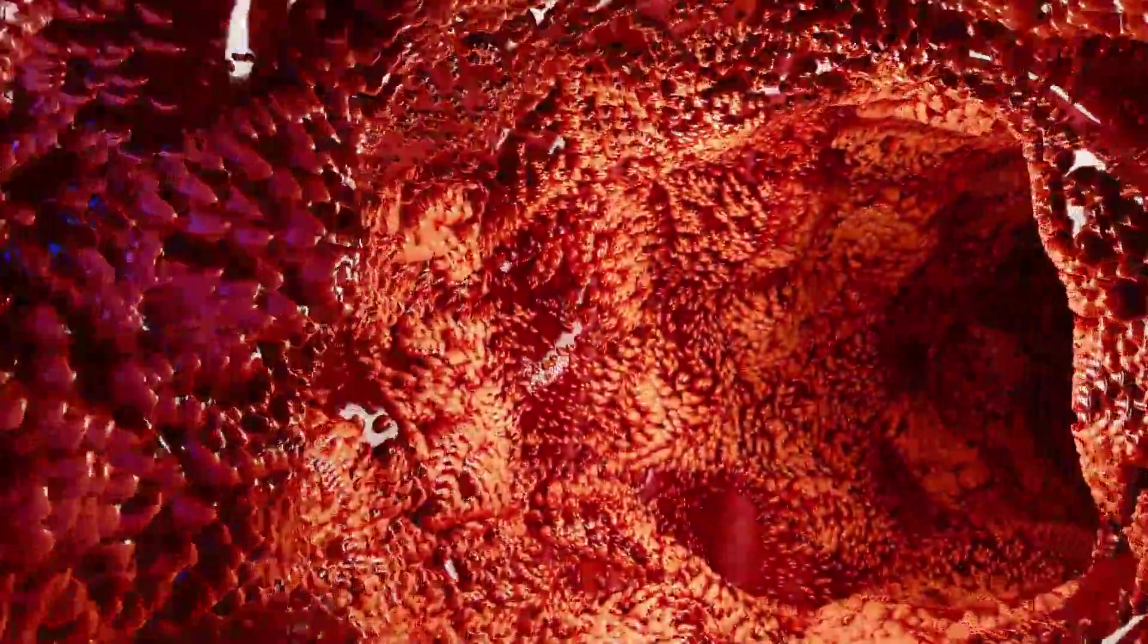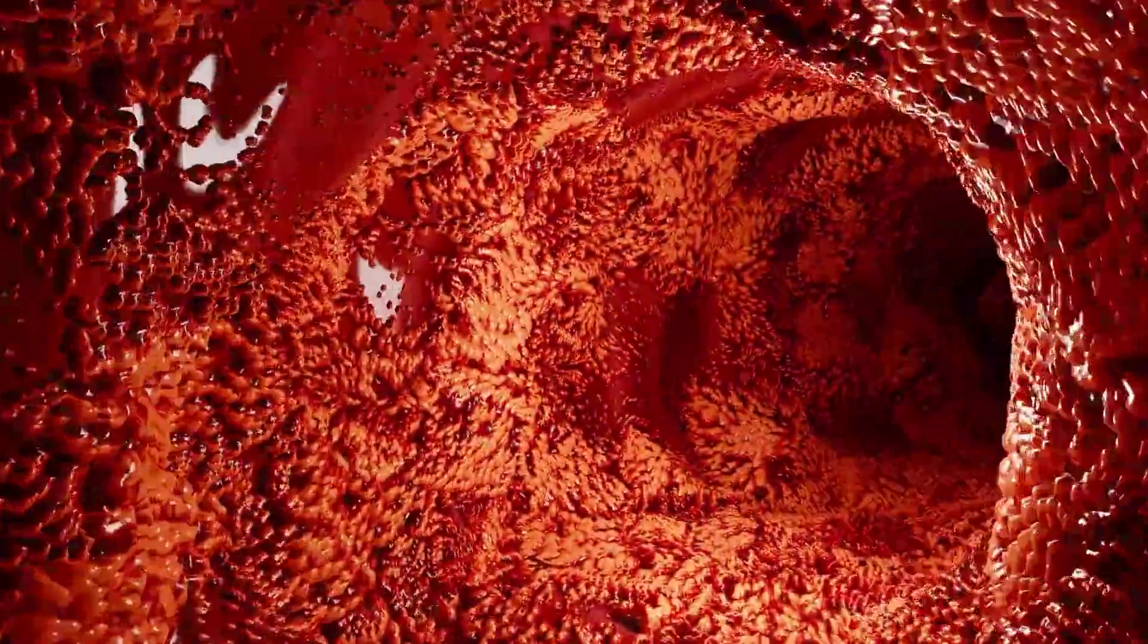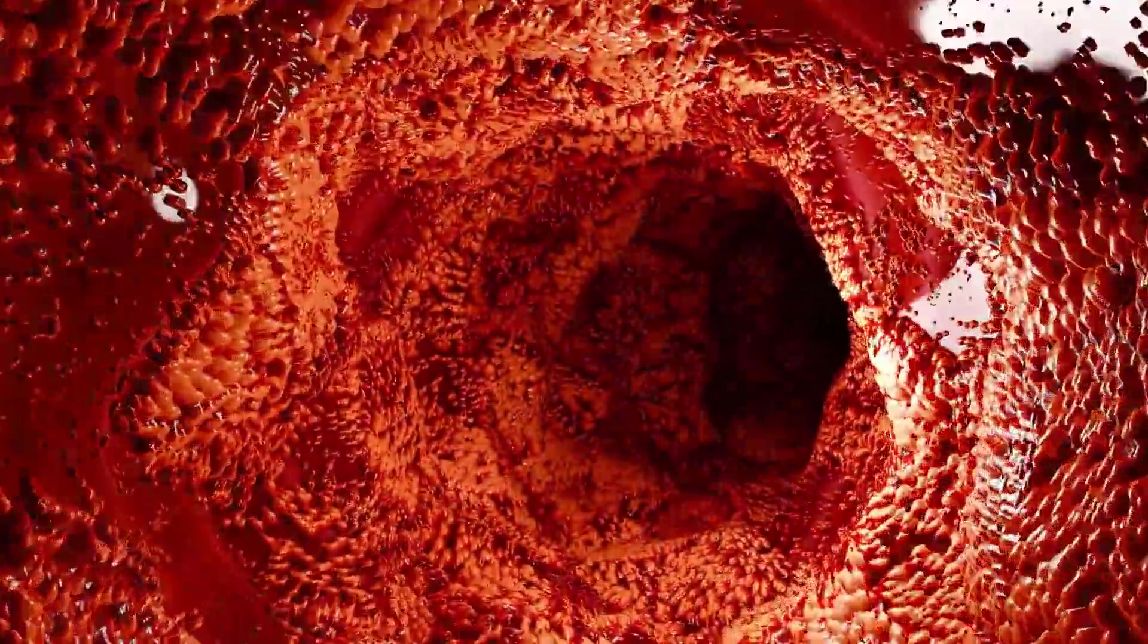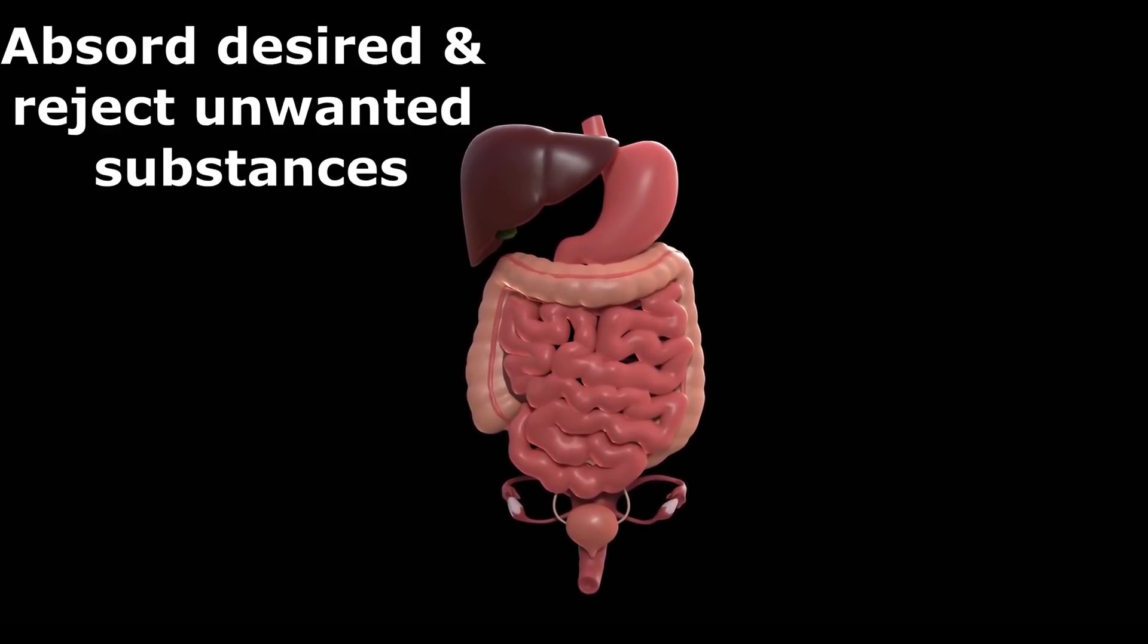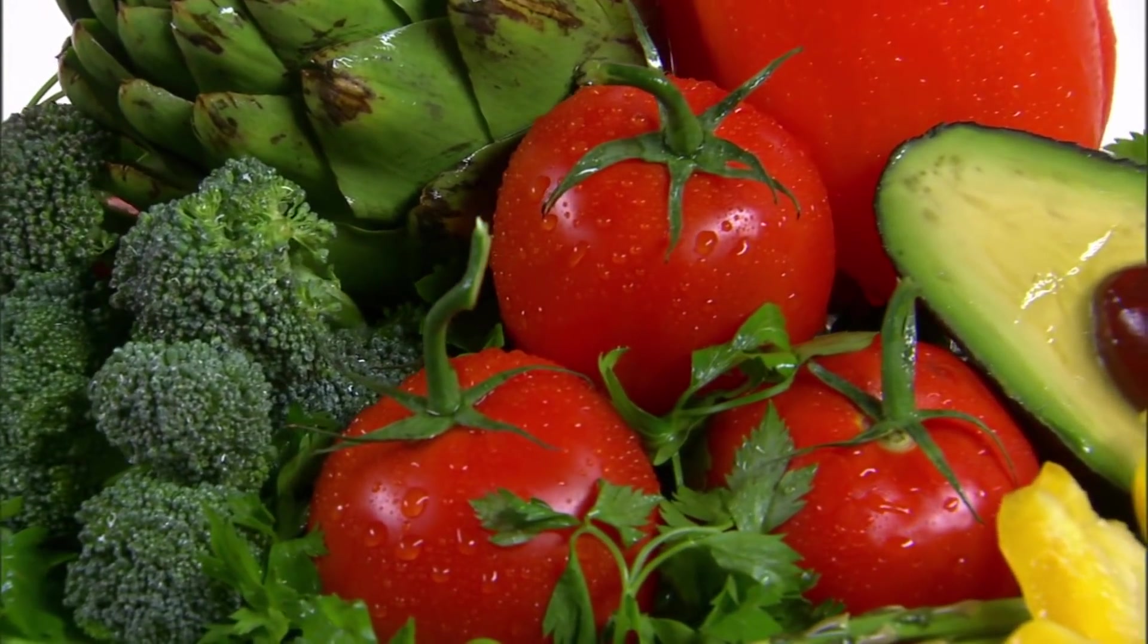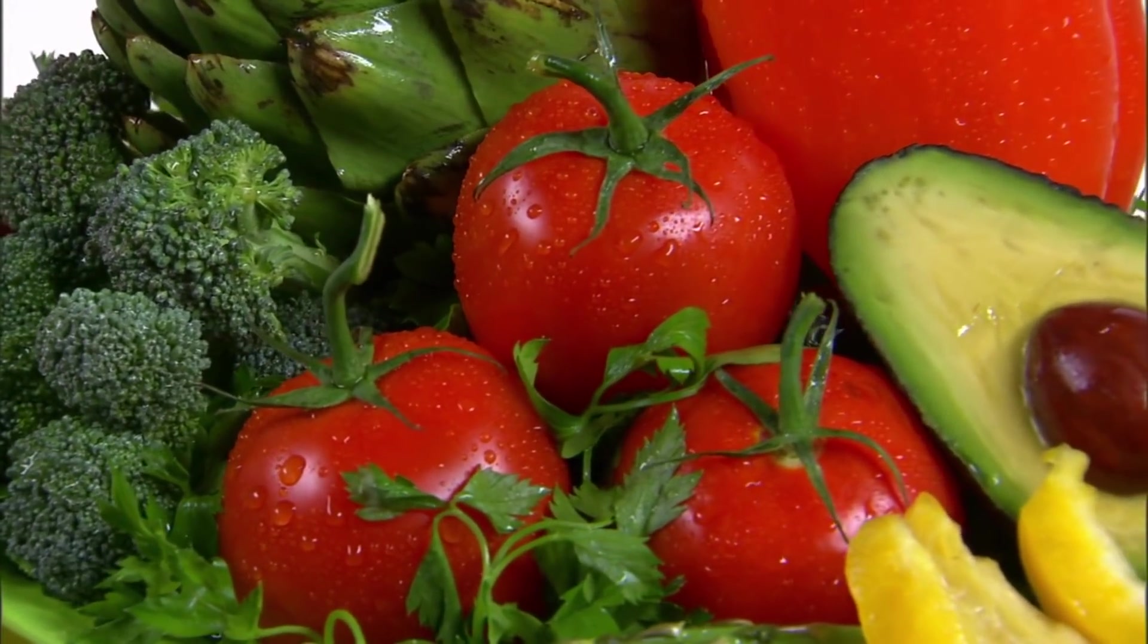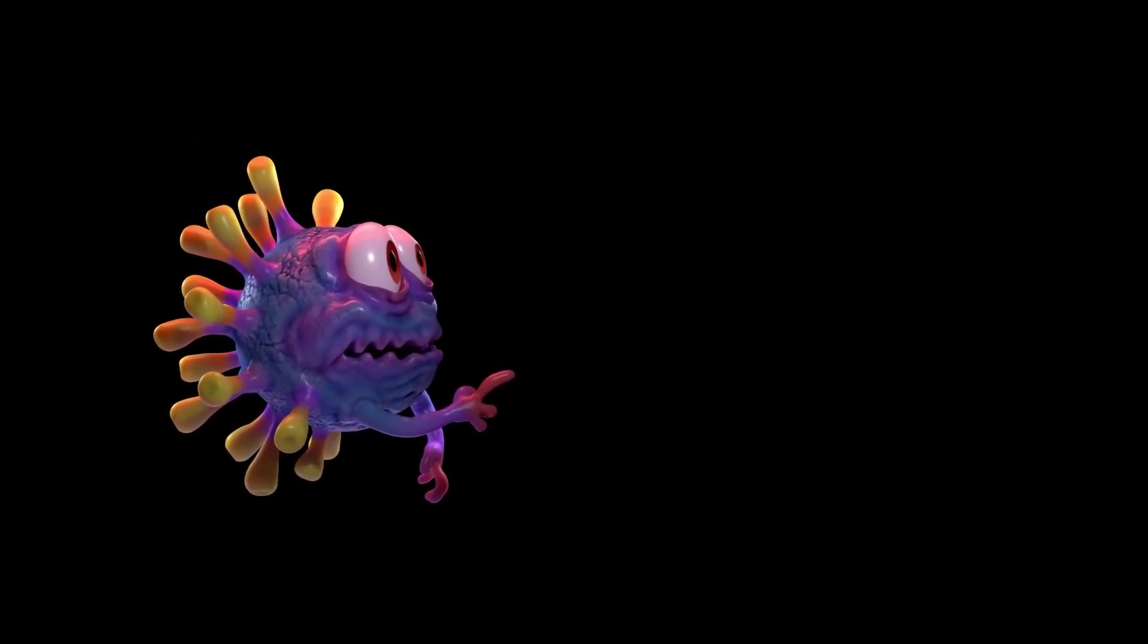For maximum absorption of nutrients present in the food, it is necessary that the contents of the intestine are well mixed. This job is taken care of by the gut brain. Its function is also to decide what to absorb and what to reject. The second brain knows it very well. What nutrients are beneficial and what substances and microbes are harmful for the body. So, it does it effectively.